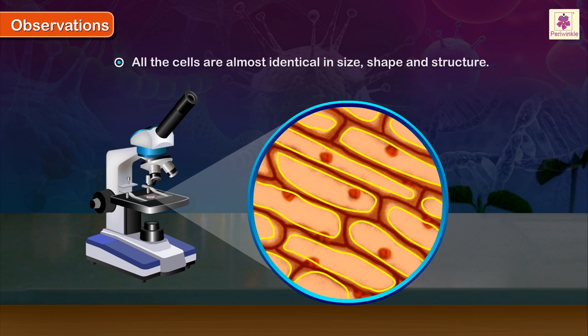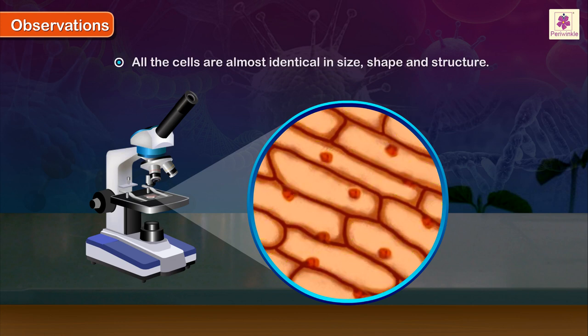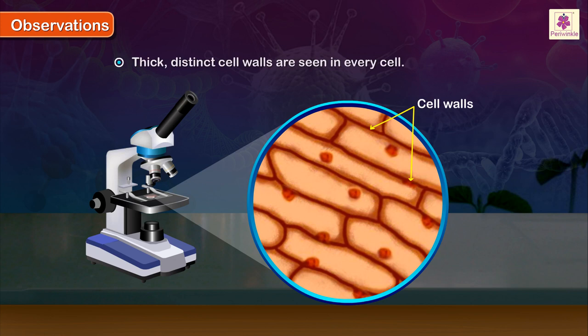All the cells are almost identical in size, shape, and structure. Thick distinct cell walls are seen in every cell.